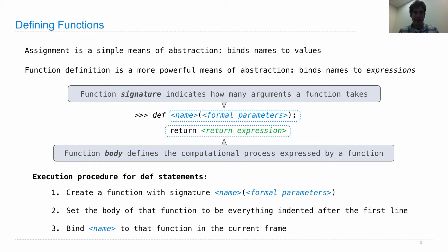The most important piece of the execution procedure for def statements is this: step two says we set the body of the function to be everything indented after the first line — it does not say we actually execute that body. So when the def statement is executed for def square(x): return mul(x, x), no multiplying actually happens. The body just gets squirreled away — hidden safely — as part of the function without actually getting executed until the function is called.